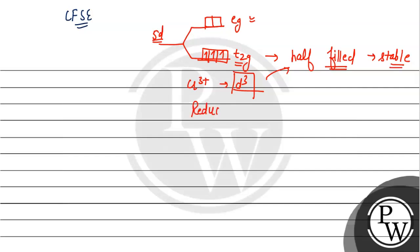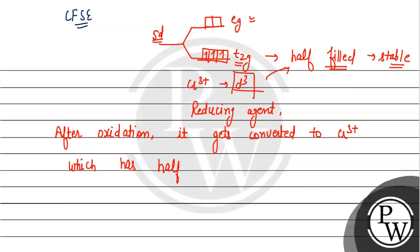So if we write why Cr²⁺ is a strong reducing agent, we write: After oxidation, it gets converted to Cr³⁺, which has a half-filled T2g orbital, which is very stable.